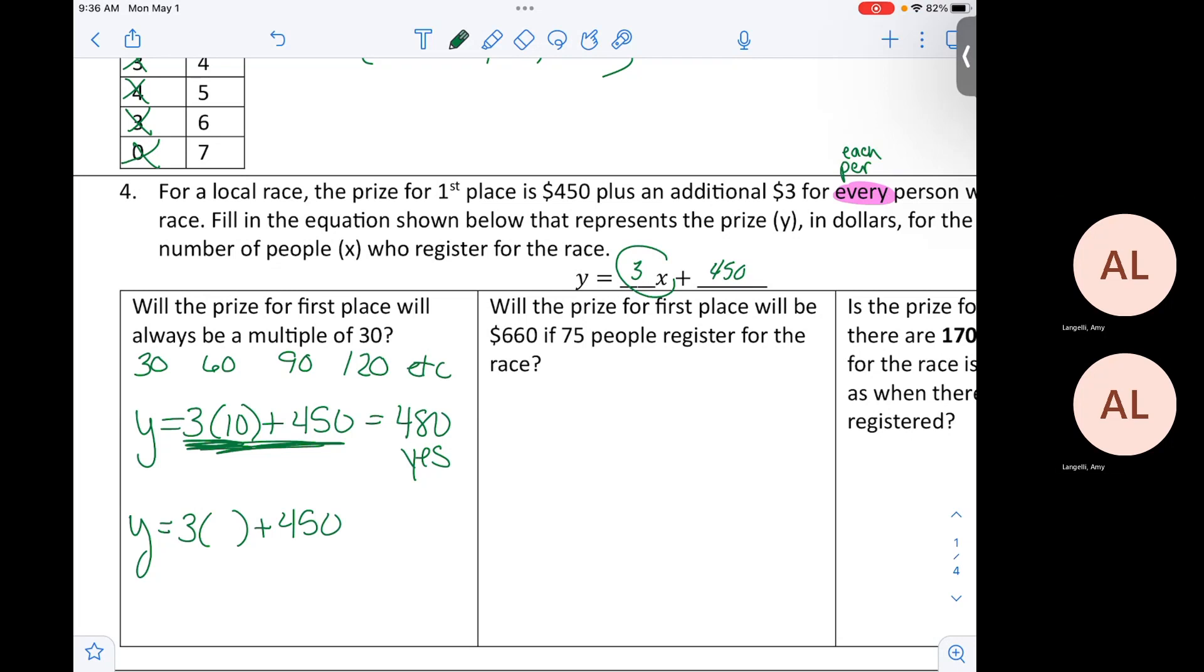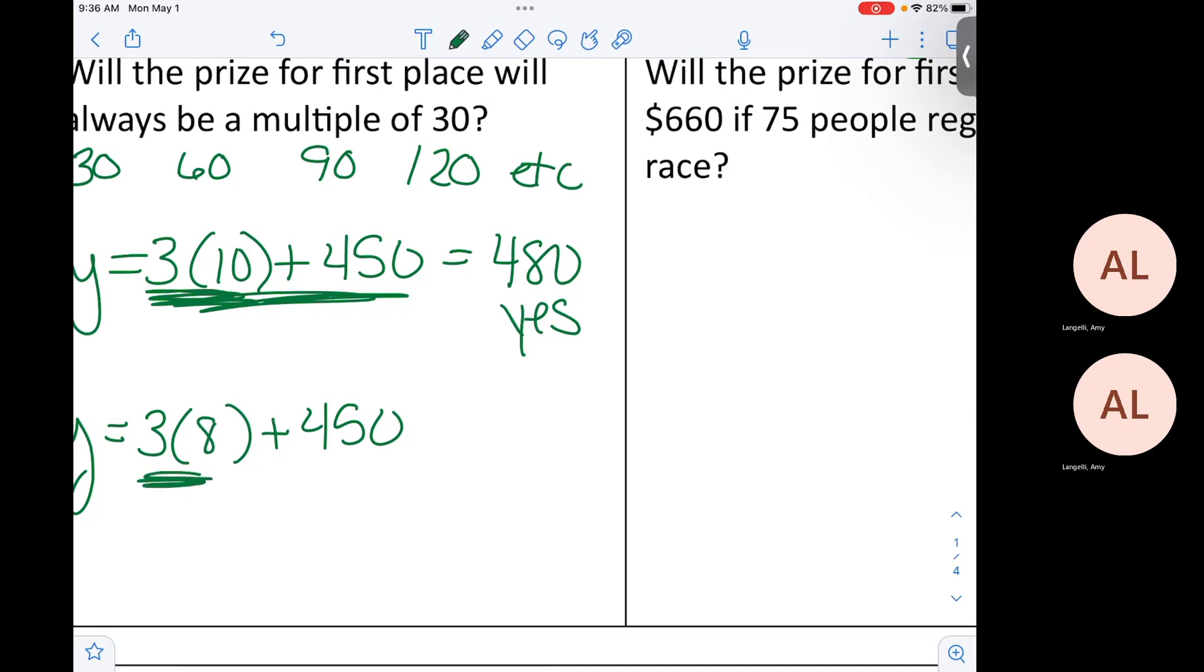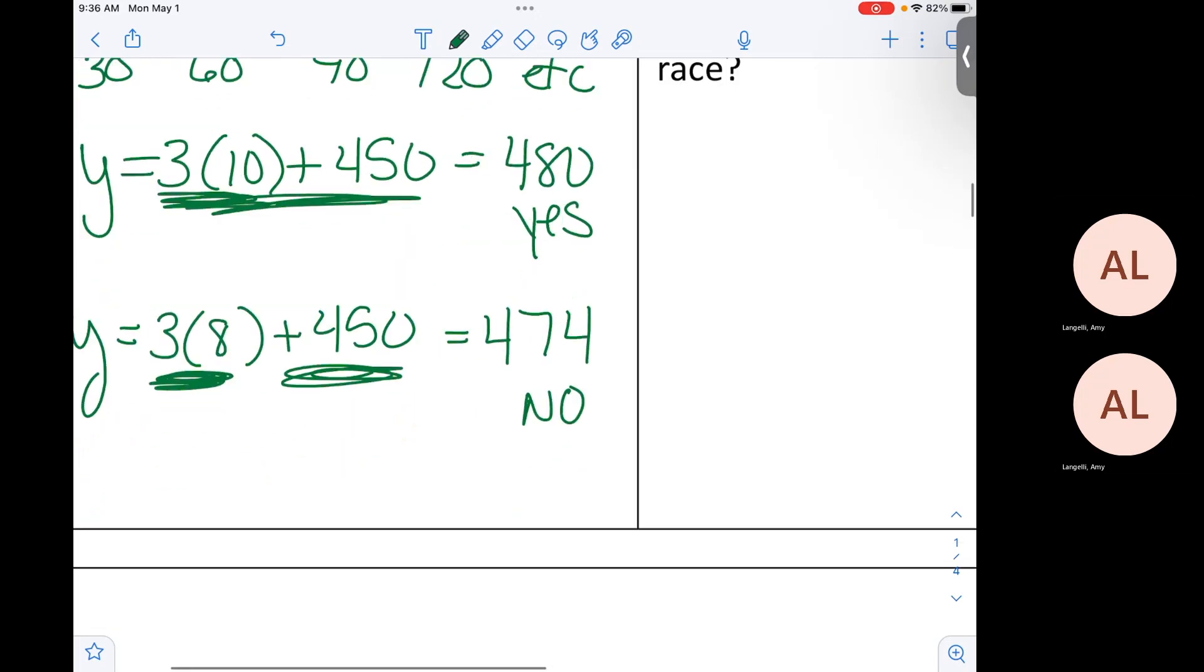What should we plug in? You plug in 10? So let's do Y equals 3 times 10 plus 450. 3 times 10 is 30. 30 plus 450 is 480. Is that a multiple of 30? So let's write yes here. Let's plug in something else. Plug in some weird number. 8? Can you guys do that? That's 24 plus 450. Is that a multiple of 30? No. So it says, will it always be a multiple of 30? What do we write? No.